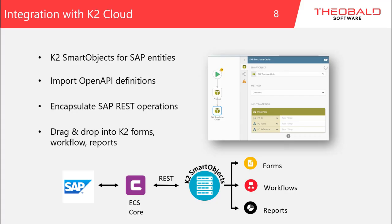So how does that exactly work with K2, the platform we have prepared the showcase for? In K2, so-called smart objects can be used to create entities for SAP connectivity. An open API definition created with the ECS Core connector can be imported. REST operations can be configured and encapsulated within a smart object, and then used via drag-and-drop into a K2 form, workflow, or report.